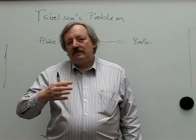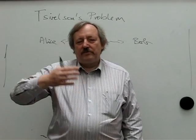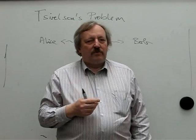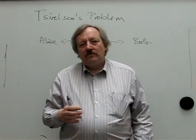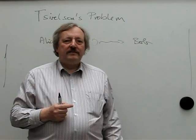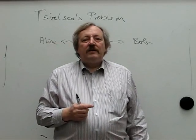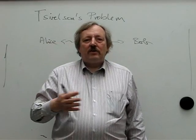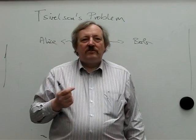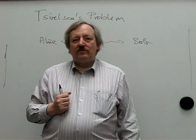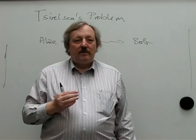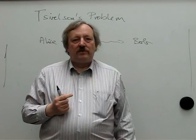Each of these observables has a certain number of outcomes, so they can measure correlations of all kinds. Then some linear combination of these correlations is a quantity we would like to bound.